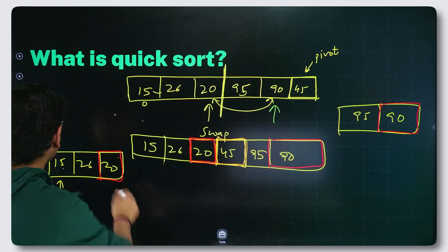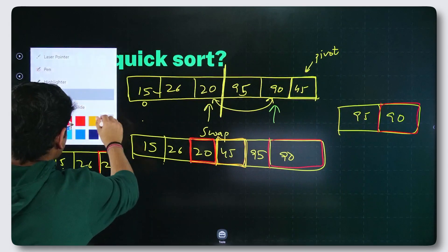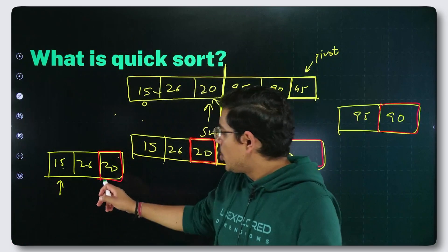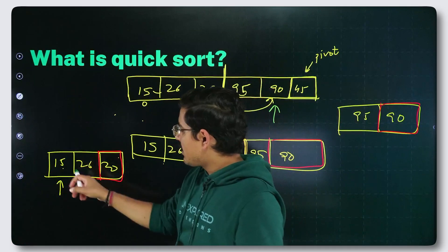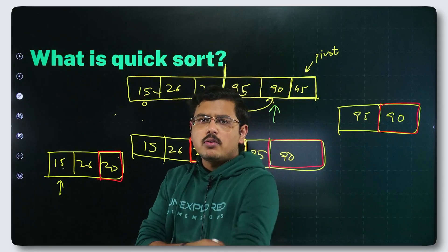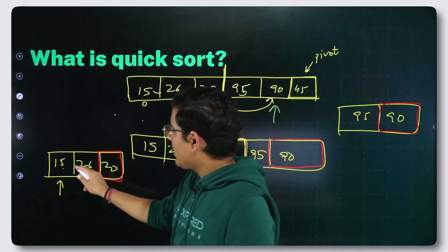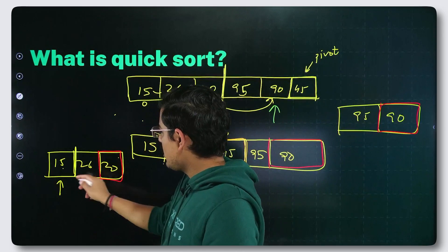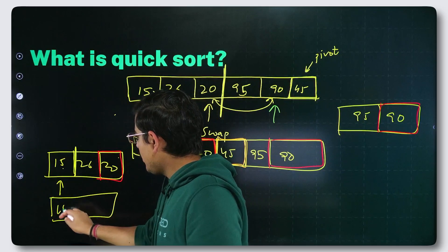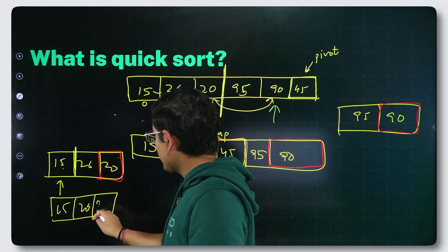Now when I go further, I will find 26 is greater than 20. So done and dusted, I have traversed the whole array. I found out the correct place. I will shift it accordingly. 15, 20, 26. This is sorted here.